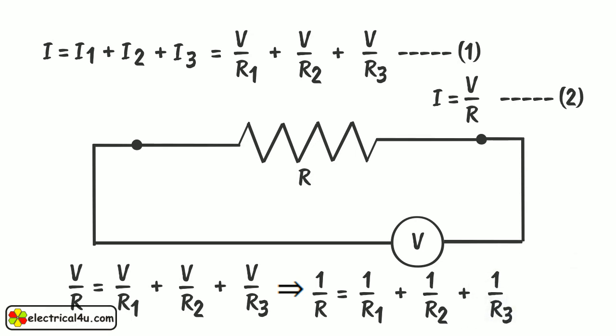In general, instead of 3, if there were N number of resistors connected in parallel, the reciprocal of equivalent resistance would be, 1 by R equals 1 by R1, plus 1 by R2, plus 1 by R3, plus dot dot dot up to 1 by Rn.